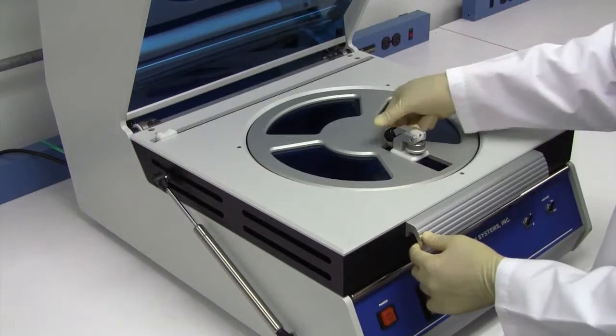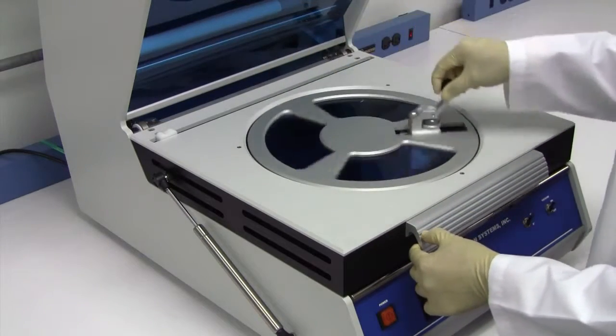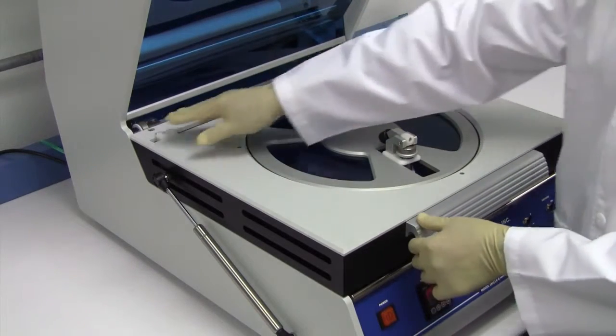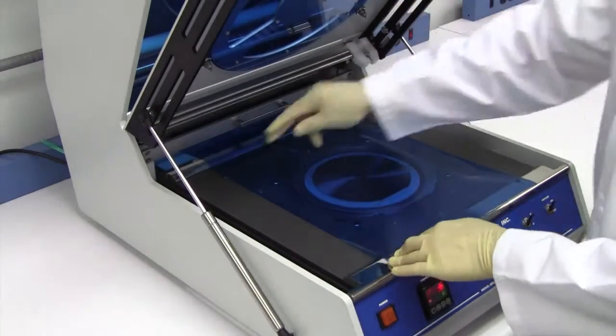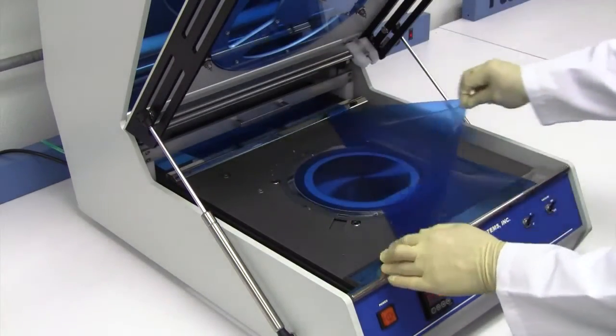Close the lid and rotate the circular cutter 360 degrees to cut the film along the film frame. Slide the end cutter, open the lid and remove the excess unmounted film.